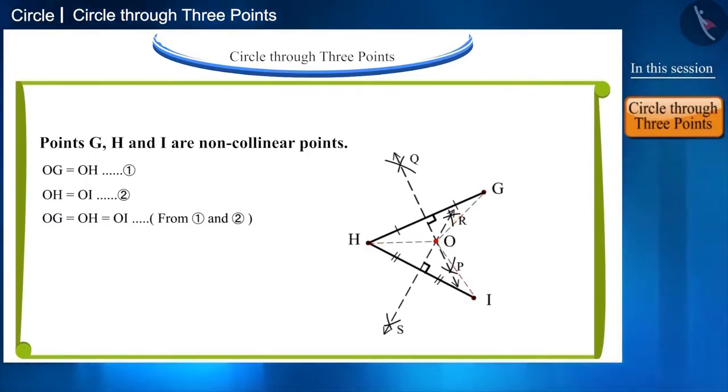So, if we draw a circle by assuming point O as the center and OG as the radius, then it will also pass through OH and OI. And this is a unique circle, that is, we cannot draw any circle other than this that will pass through these three non-collinear points.